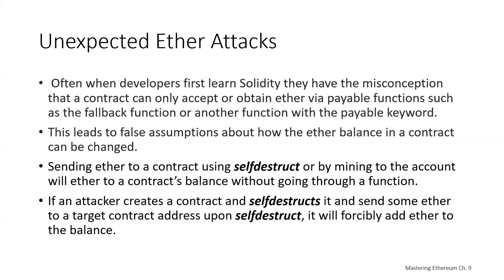So if an attacker wants to attack a contract that's vulnerable to an unexpected Ether attack, the easy way is for the attacker to create a contract, self-destruct that contract, and then Ether will arrive at the target contract address upon self-destruct.